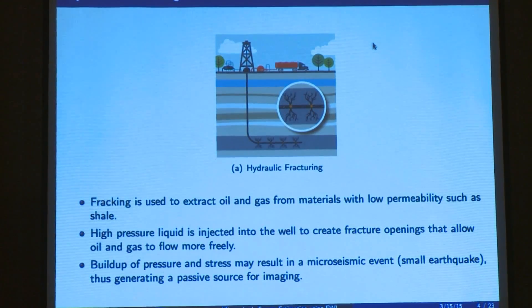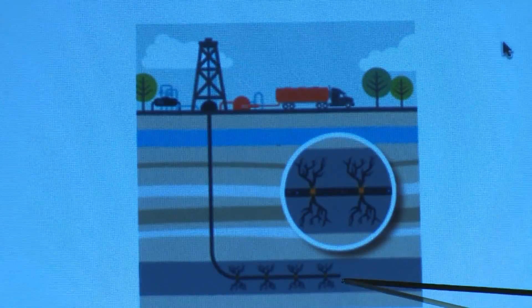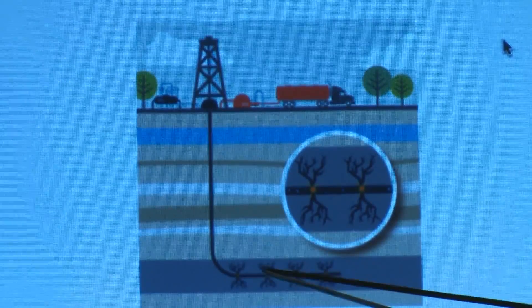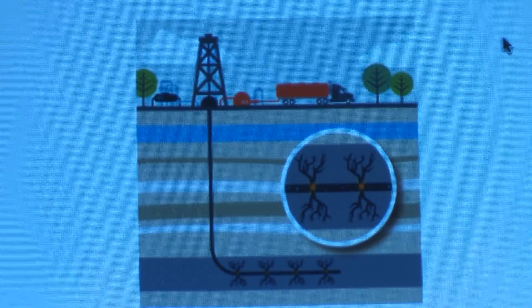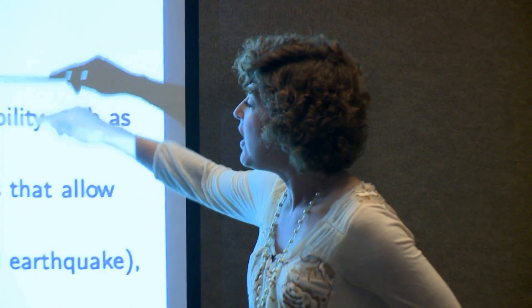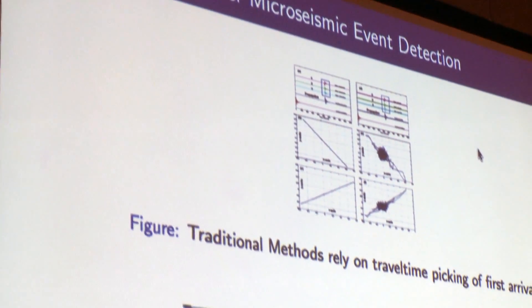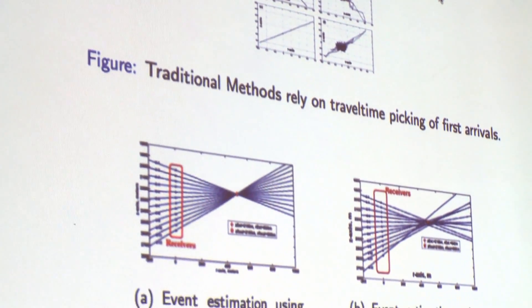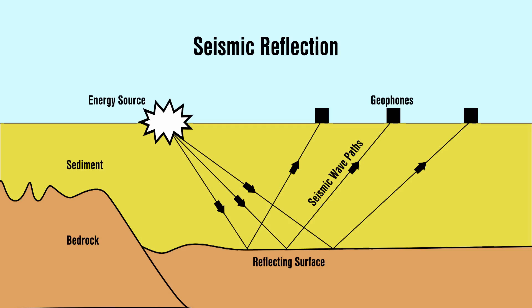Moving on to hydraulic fracturing — what you see here is a well with little perforations where pressure is so great that you're creating a flow path, a fracture in the ground. You cause a big increase in pressure when you inject water, and as a secondary effect you get little tiny earthquakes, called microseismic events. We're interested in estimating these small earthquakes because we'd like to use them as passive sources to get a handle on what the subsurface looks like.